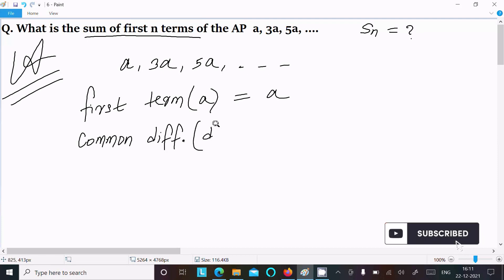So second term minus first term: 3a minus a, or you can do 5a minus 3a. So the common difference is 2a.